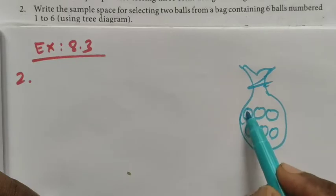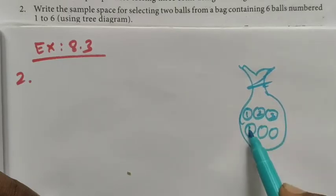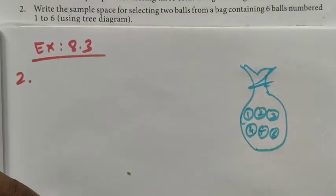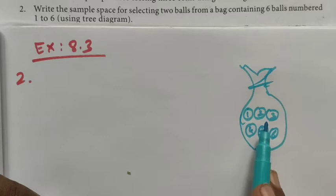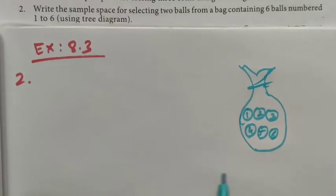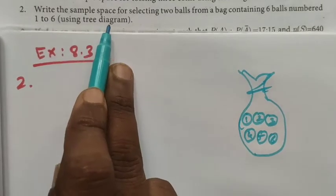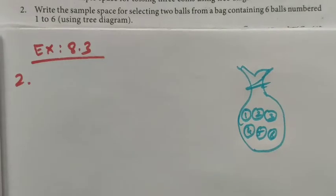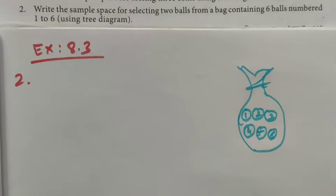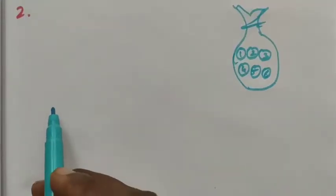The balls are numbered from 1 to 6. We have to select two balls from this bag. To write the sample space, we will use a tree diagram. Here we are going to draw the tree diagram.